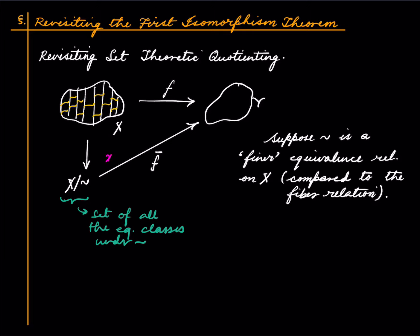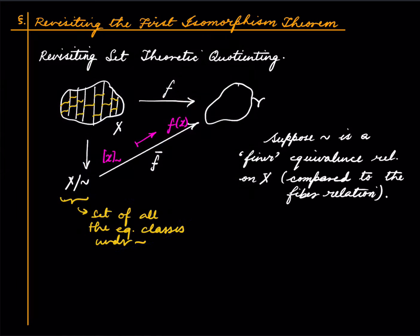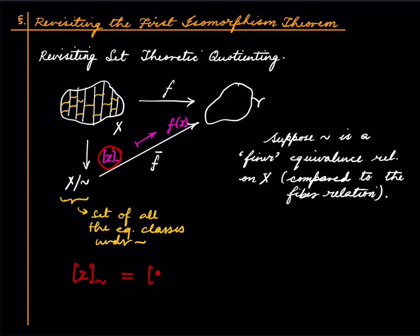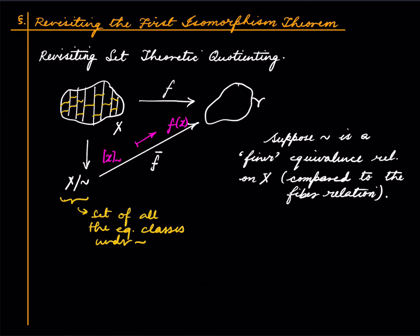F bar takes an equivalence class under tilde to F of X, and one can check that this is well defined. The diagram commutes: you pick some element x, it goes to F of x, and under the quotient map it goes to its equivalence class, which is also sent to F of x. The key check for well-definedness is: if the equivalence class of X equals the equivalence class of X prime, then X and X prime are in the same class under tilde, hence in the same fiber, and hence have the same image under F. So this diagram commutes.